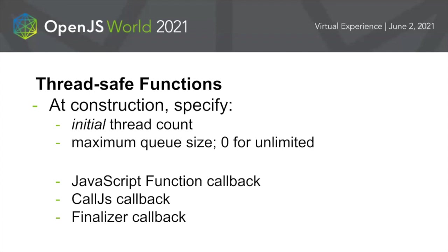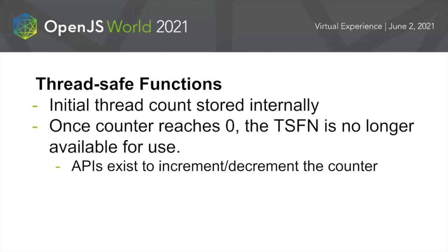At construction of thread-safe functions, you specify some queue data. You have a JavaScript function callback, a call.js callback, and a finalizer callback. You also specify your initial thread count and maximum queue size. Once the thread count reaches zero, the thread-safe function is no longer available for use and will be cleaned up and finalized.